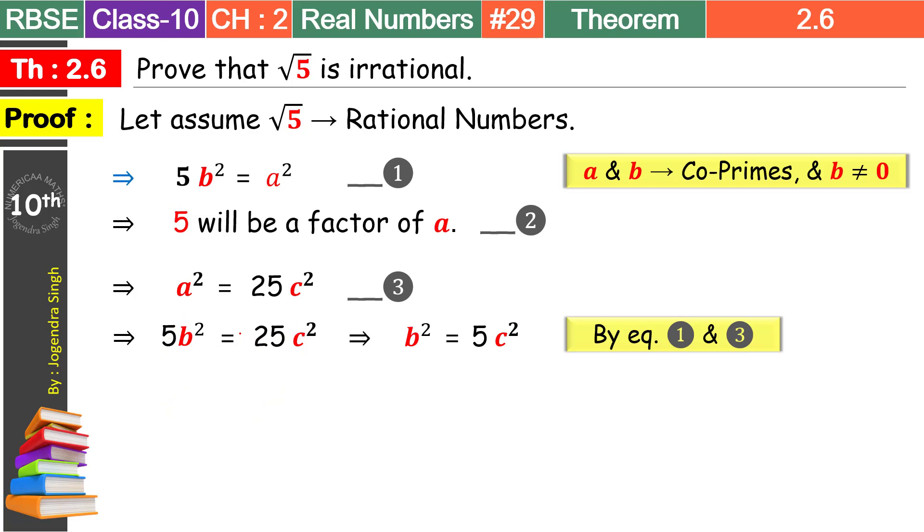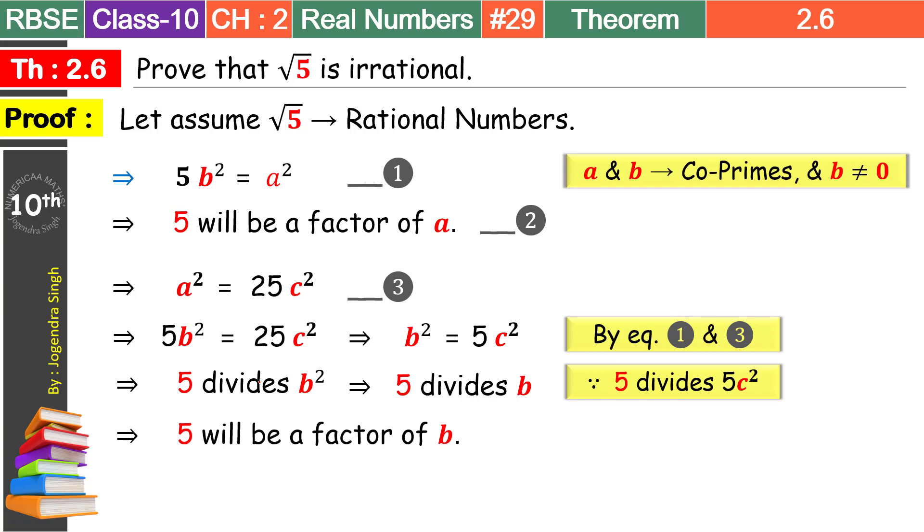Same situation hai jo equation 1 mein hum ko mili thi. Is equation ki right side 5 se divide hoti hai. Hum ko dikhai de raha hai. So then this equation ki right side 5 se divide hoti hai, toh uski left side bhi 5 se divide hogi. Usi number se divide hogi. In that case we can write this as. Because 5 divides 5c square, that's why 5 also divides b square. So we can write this as 5 divides b square implies 5 also divide b square. Ab yeh jo humne situation mili hai, ismein 5, b ko divide tabhi karega jab 5, b ka factor hoga. Aur agar 5, b ka factor hai, toh hum likh sakte hain. So 5 will be a factor of b. Yeh statement ko bhi hum ek number de dete hain. And the number is 4.